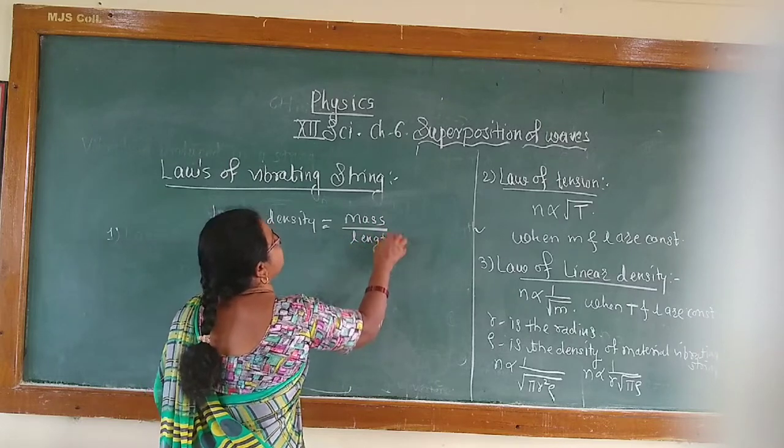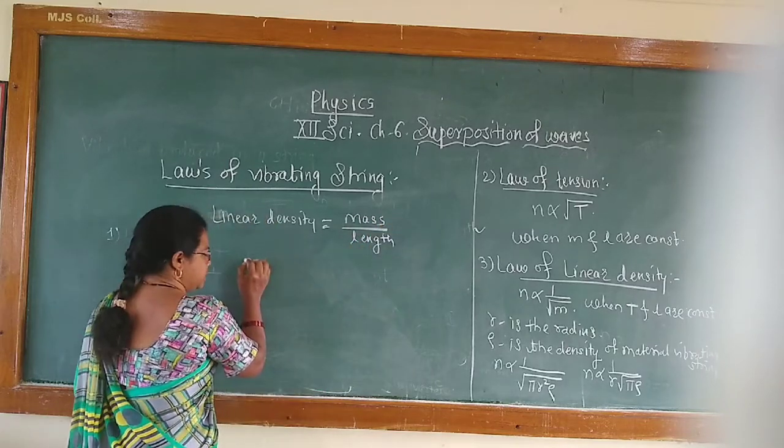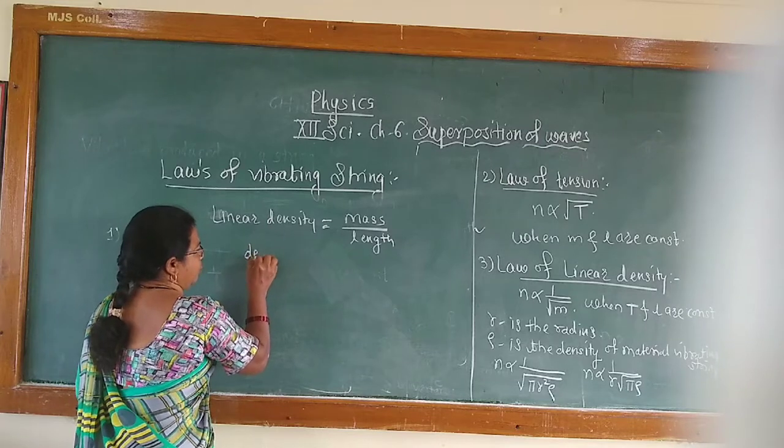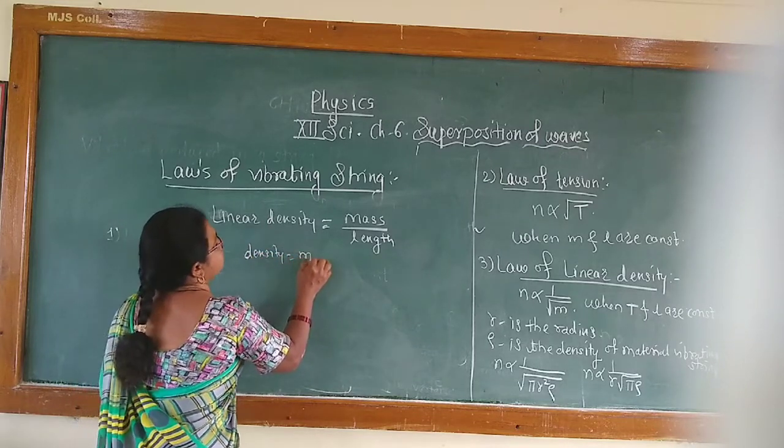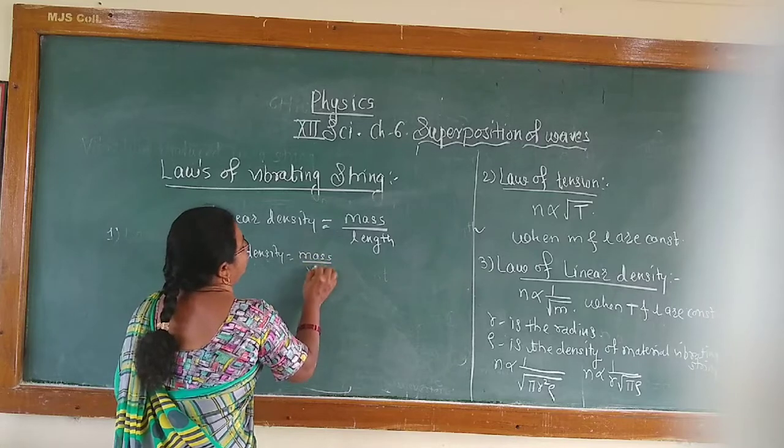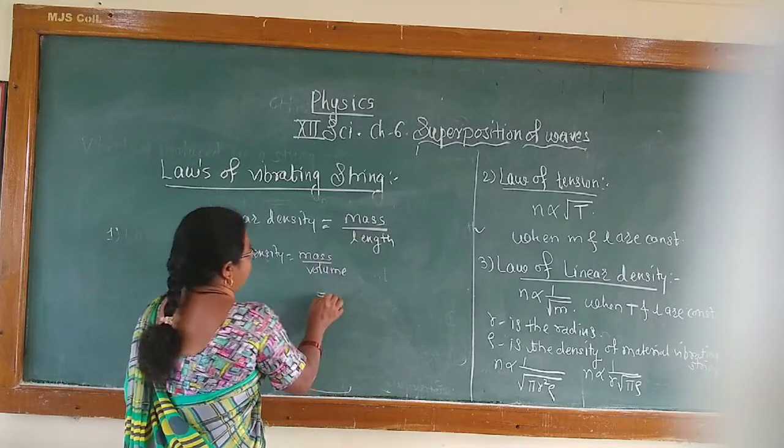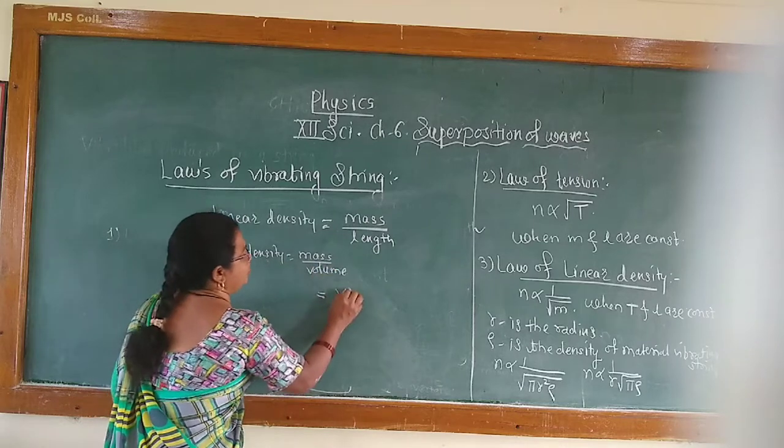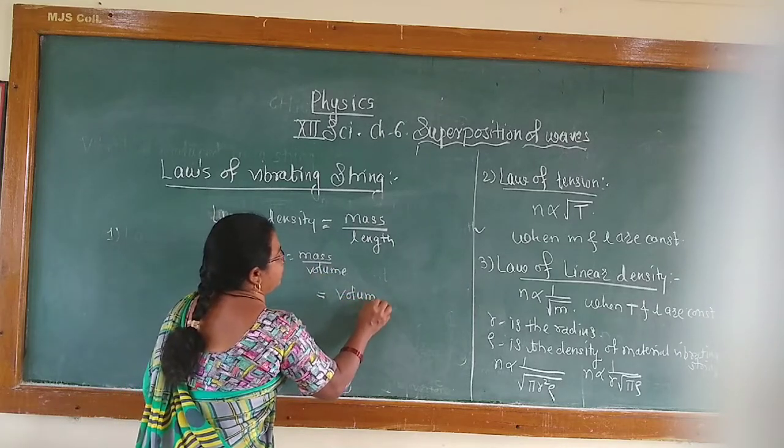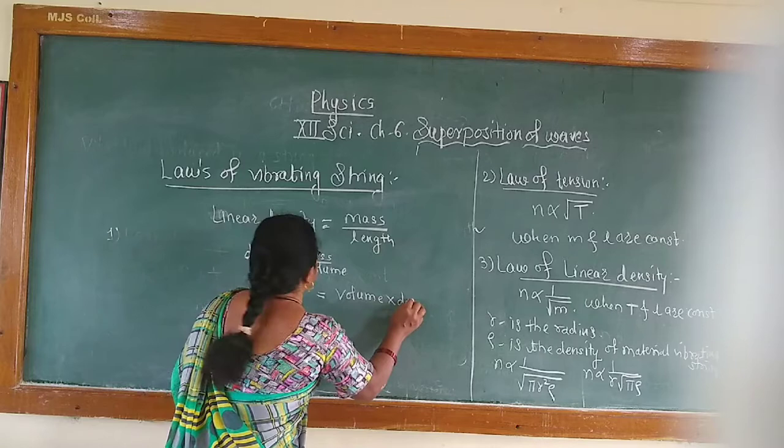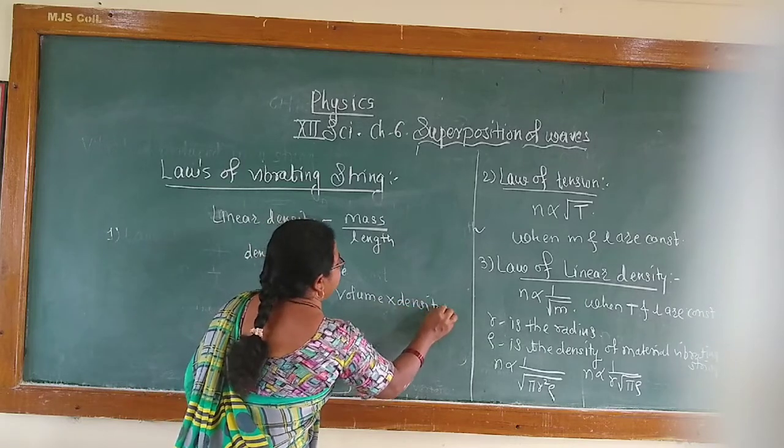Then, mass is equal to what? Density or rho, density is equal to mass upon volume. Therefore, mass is equal to density into volume, which is volume into density divided by length.